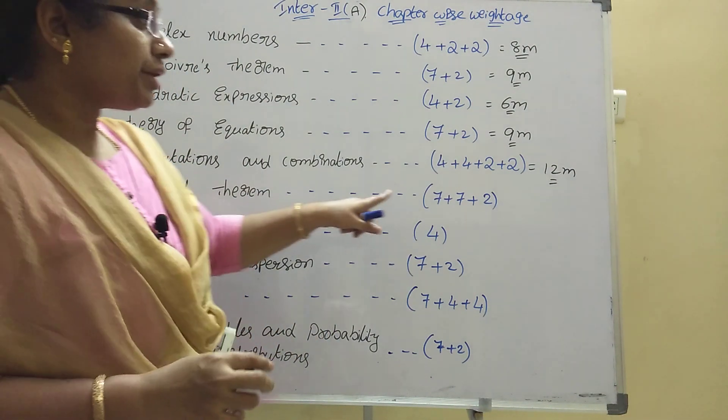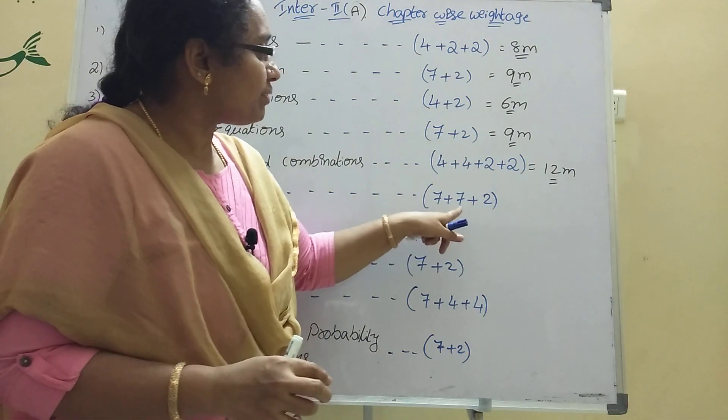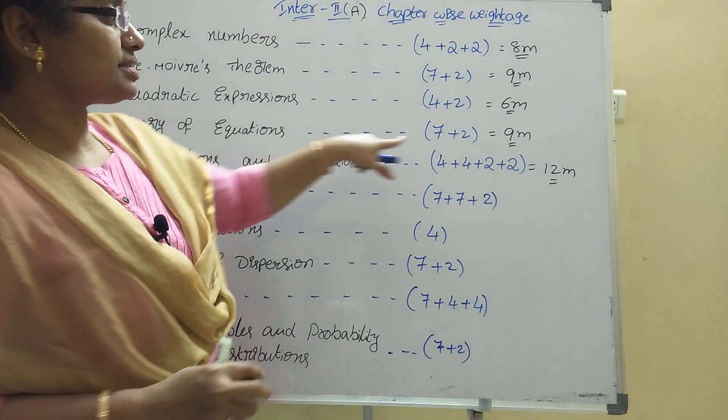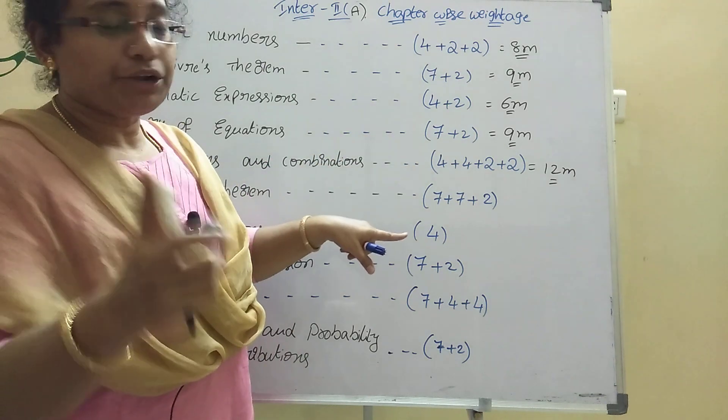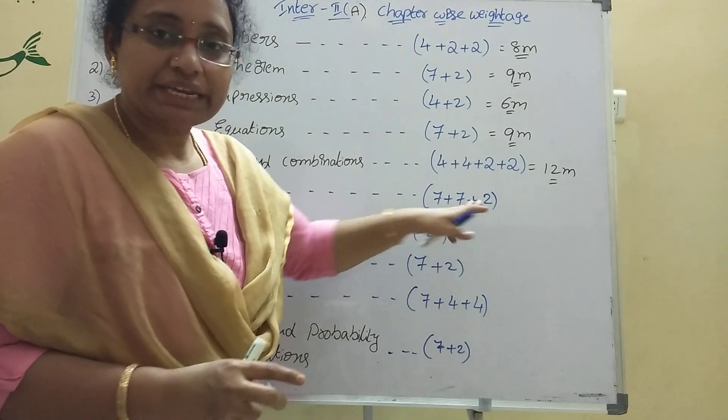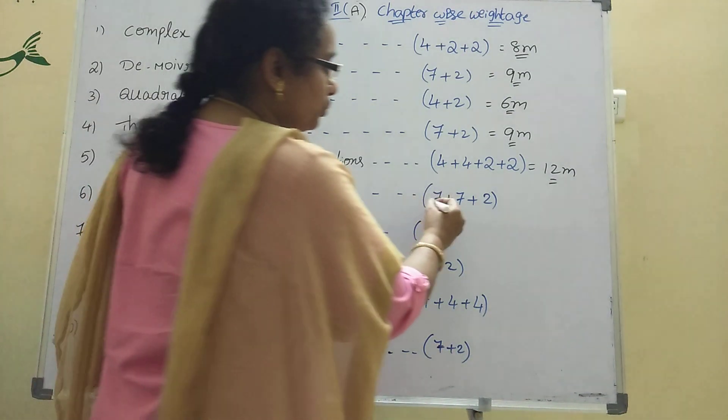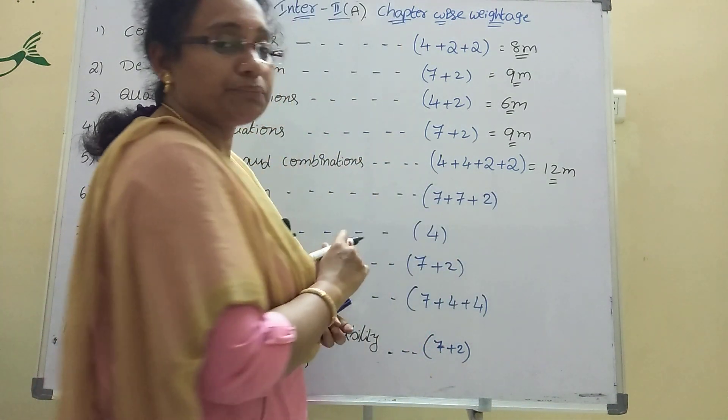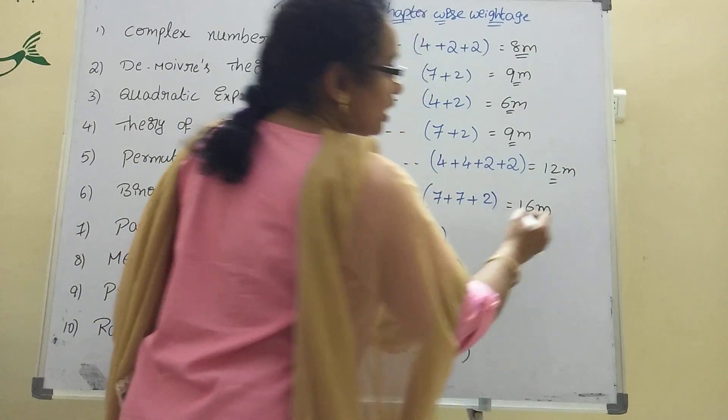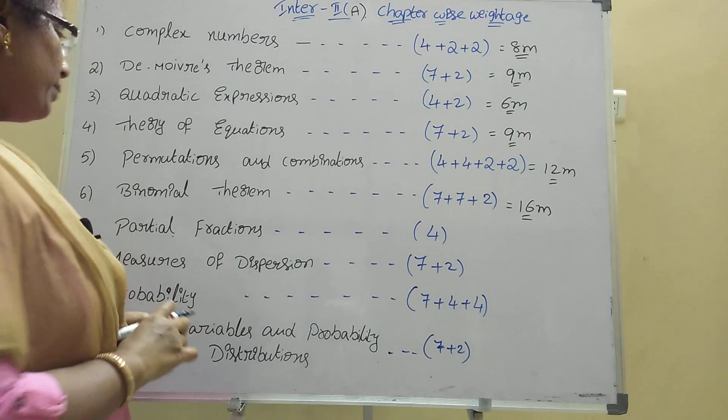Binomial theorem: two 7-marks. Every 18th bit, 19th, 20th and 21st will be binomial theorem only. Two 7-marks plus two 2-marks, no 4-mark. 7 plus 7 is 14 plus 2 is 16 marks in binomial theorem.